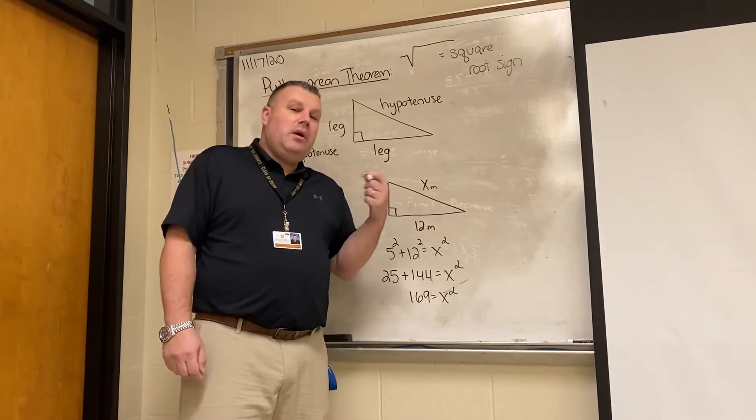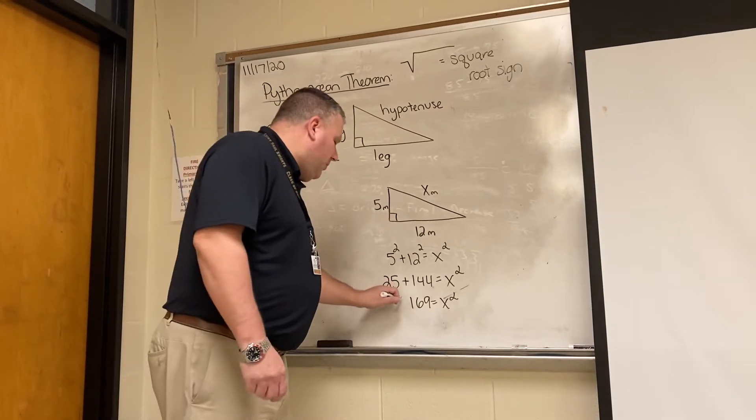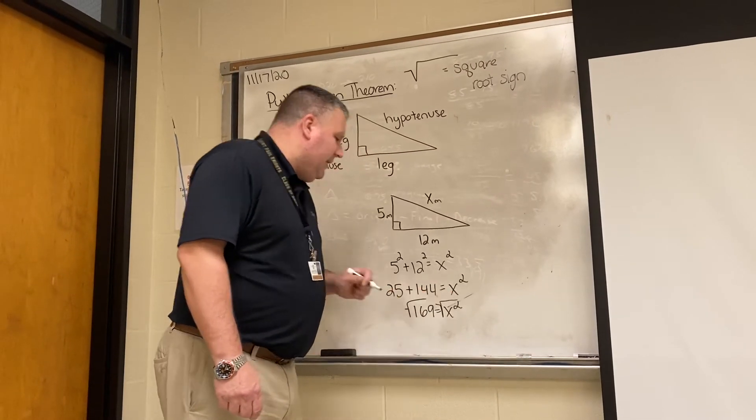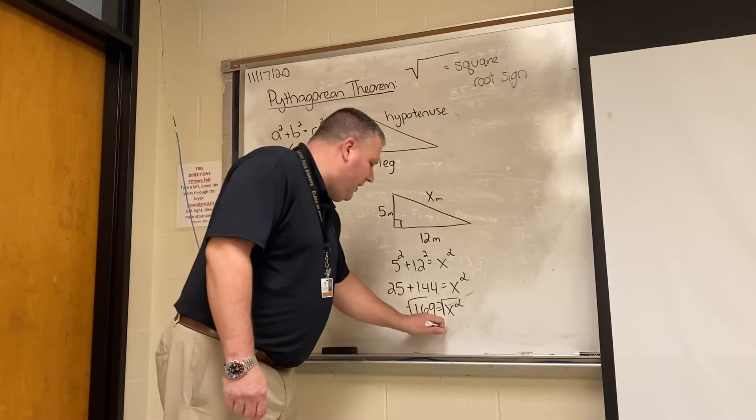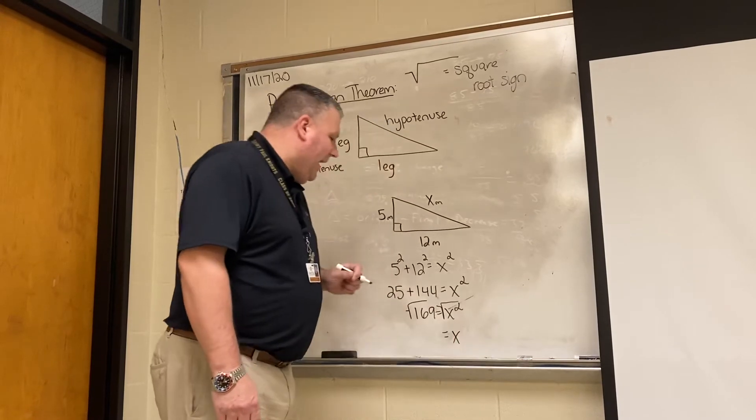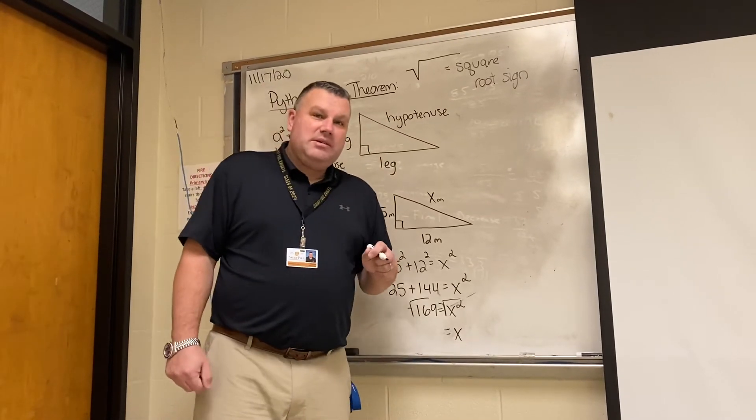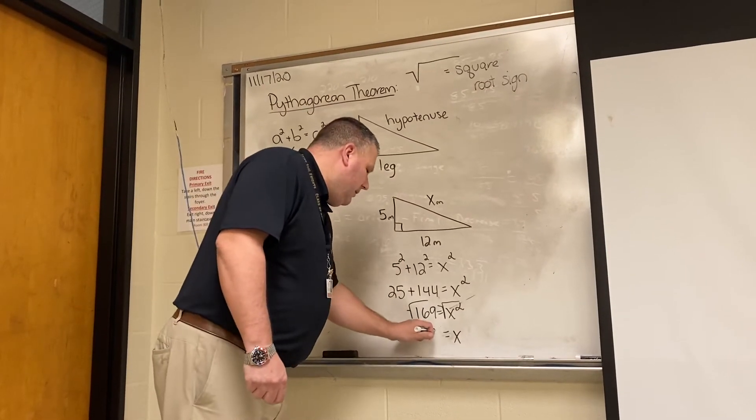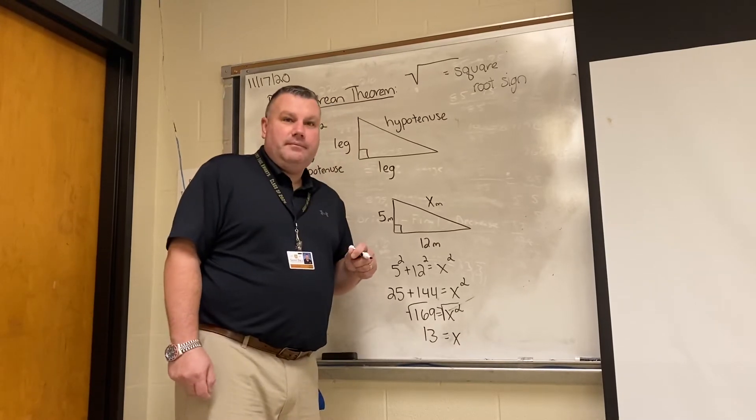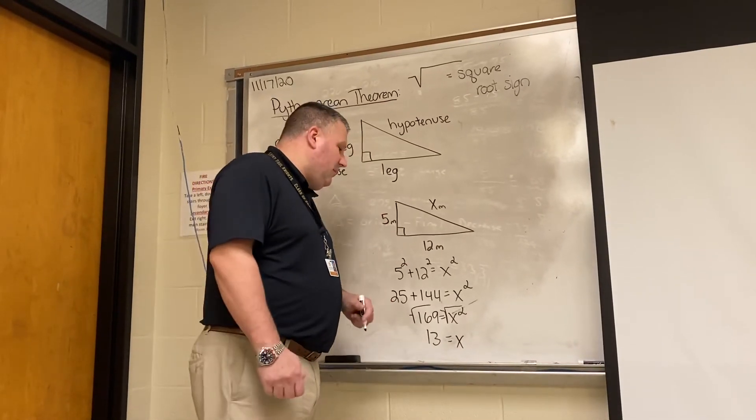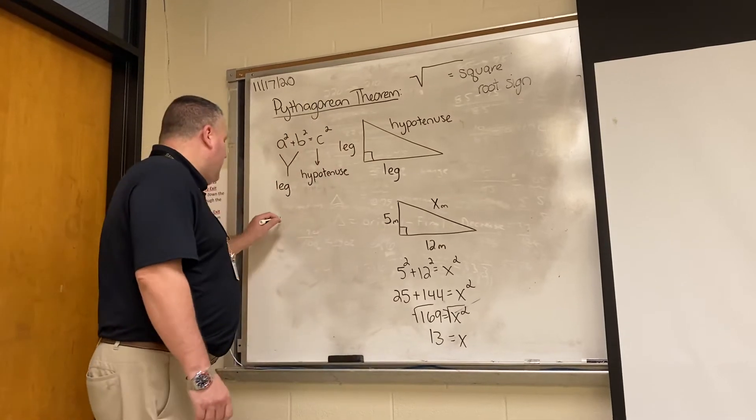This is where on a calculator, we're going to have to take the square root of both sides. The square root of x squared is just x. The square root of 169 is 13. 13 times 13 is equal to 169. Let's try another one.